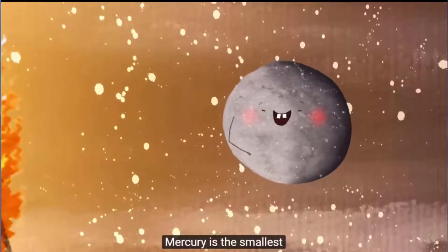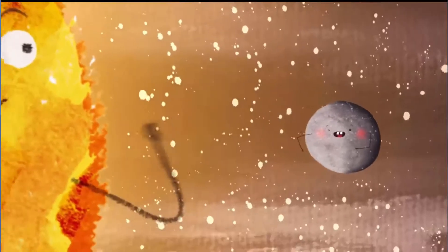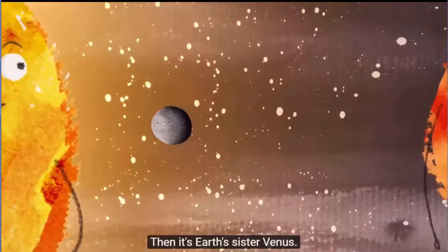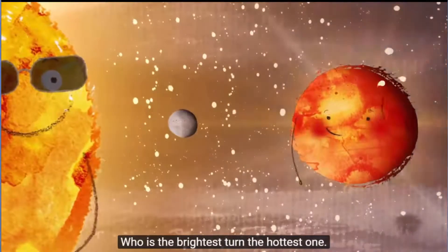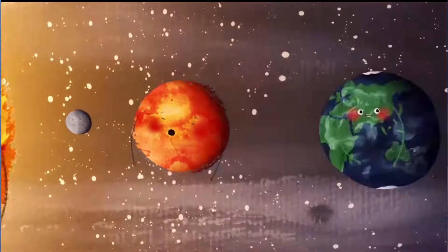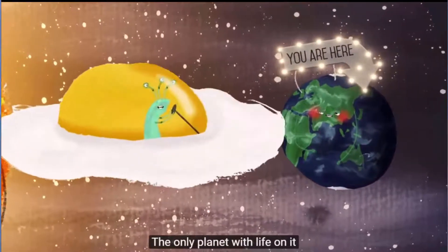Mercury is the smallest and the closest to the Sun. Then it's Earth's sister Venus who is the brightest and the hottest one. Earth is where we live, the only planet with life on it.